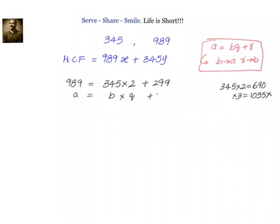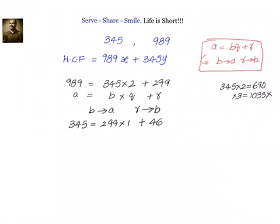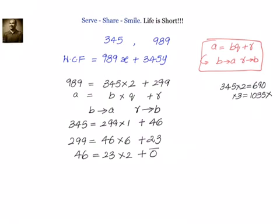In the next step, b becomes a and r becomes b: 345 = 299 × 1 + 46. Applying the lemma again: 299 = 46 × 6 + 23. Then one more step: 46 = 23 × 2 + 0. Since the remainder is now 0, we stop.